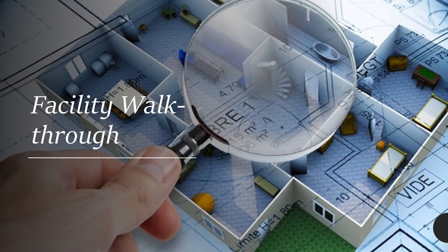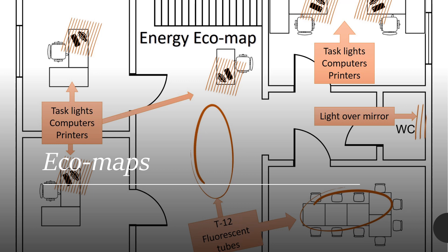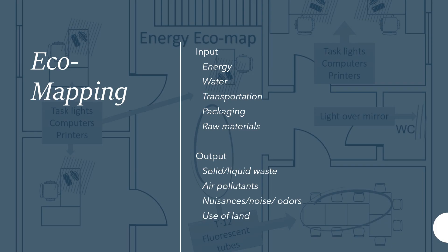First, you may want to do a facility walkthrough, or walk around if there's not a building involved. If you do a walkthrough, document what you find in an eco-map. The standard marks for eco-maps are hash marks for minor problems or use, and circles for major problems or use, with heavier circles for bigger problem areas. You do not have to label the different types of resource use or waste, although you can if it's easy to read, but you'll want to discuss them underneath the map. There are many types of resource use and waste that can be documented with an eco-map, including inputs like energy and water, but also ones you might not have considered, like transportation, packaging, and raw materials.